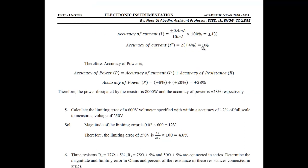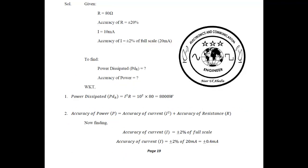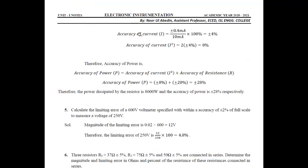So 8 percent comes from the current squared term and 20 percent from the resistance, giving a total of 28 percent accuracy of power.